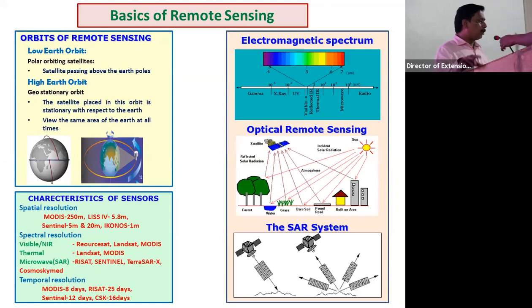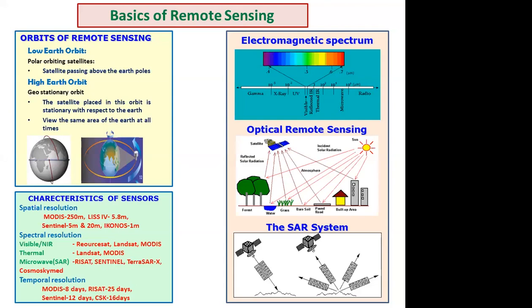Then there are geostationary orbiting satellites, placed at a height of 36,000 km, which are used for climate and weather-telling applications.